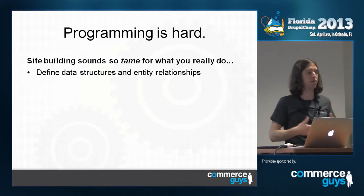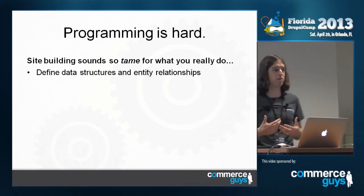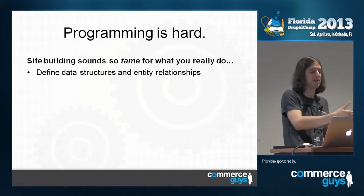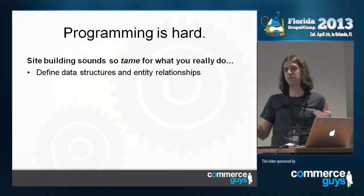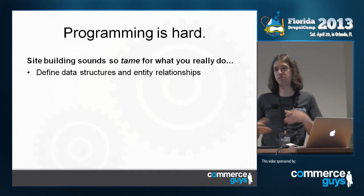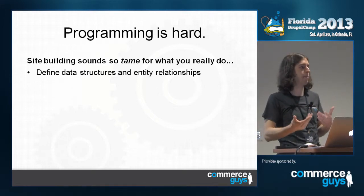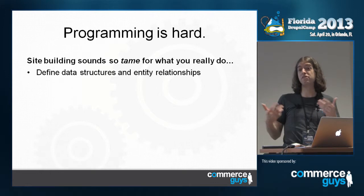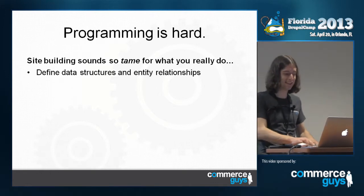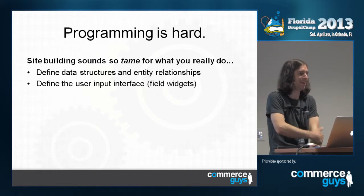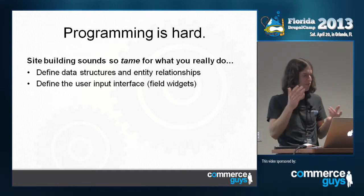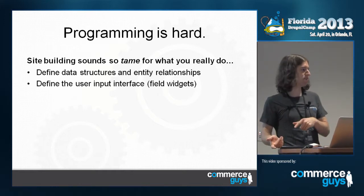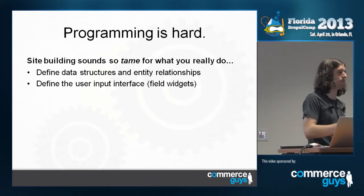Any time you create a new node type, or build a Drupal Commerce site and add a line item type or product type, you're actually programming when you do that. What you're doing in the user interface maps directly to a database that stores this data, and then there's this whole metadata language that describes the data and relationships you're building so that modules can let you extend and build on top of it. So you have to know what data is like and how to map things together, and know when you're doing something stupid. It's really hard to get that right — I still don't feel like I've arrived there.